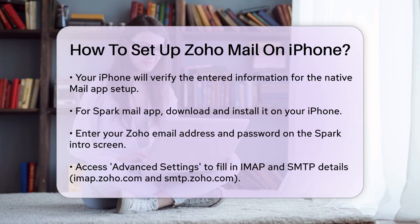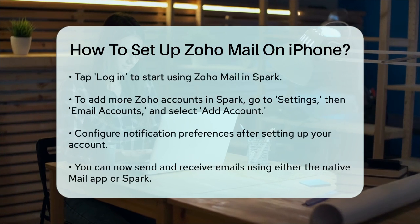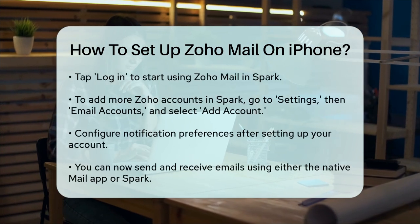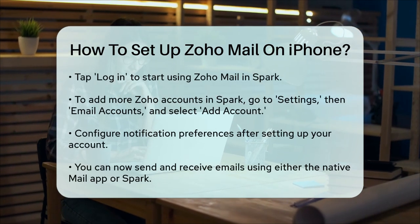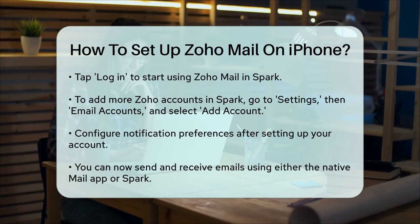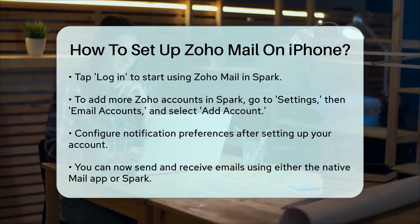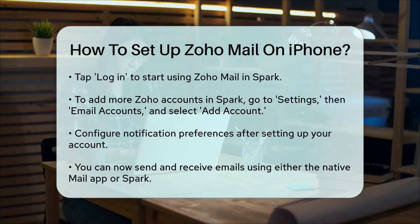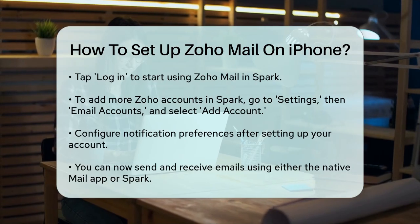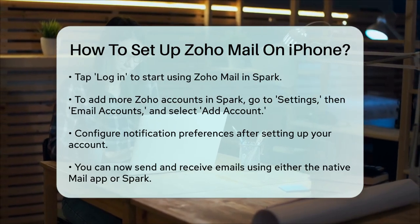If you need to add additional Zoho Mail accounts, launch Spark, tap the sidebar button at the top left, scroll down to Settings, then Email Accounts, and select Add Account. Choose Private Email Account, then set up manually and follow the same steps as before.